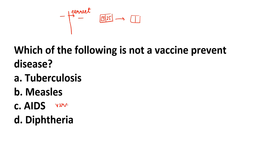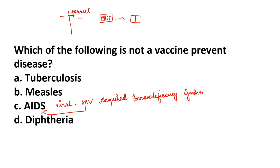AIDS is a viral disease caused by HIV — Human Immunodeficiency Virus — which destroys our immunity. Its full form is Acquired Immunodeficiency Syndrome. No vaccine has been developed yet because when HIV enters the body and reproduces, it continuously creates new variants with mutations. TB has a vaccine, Measles has one, and Diphtheria is covered by the DPT vaccine. So the correct answer is C — AIDS.